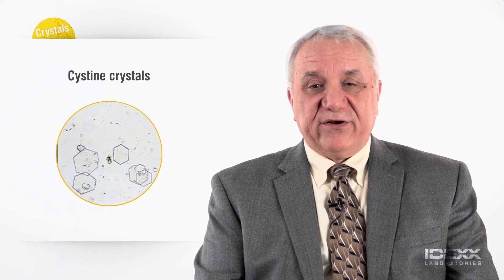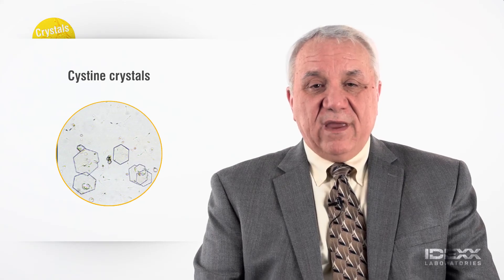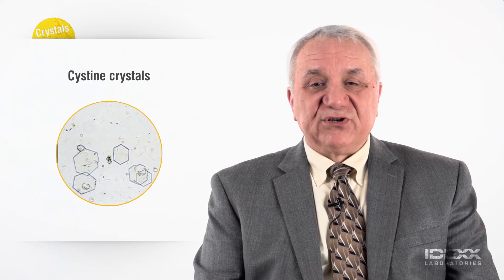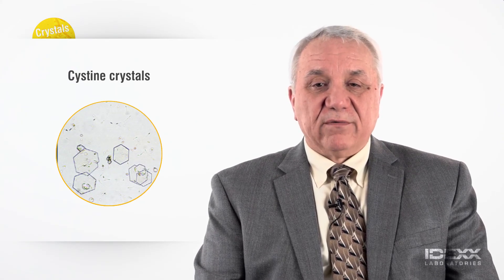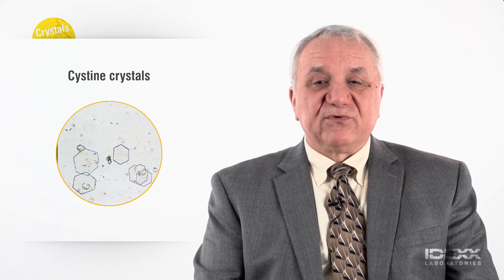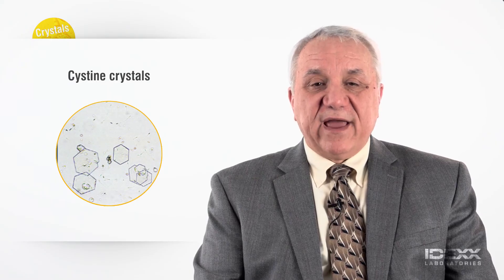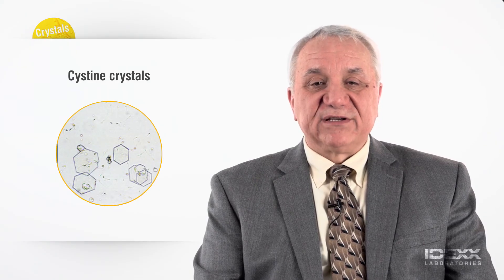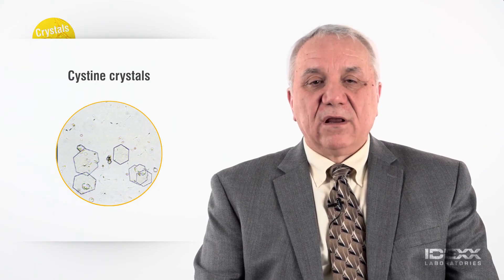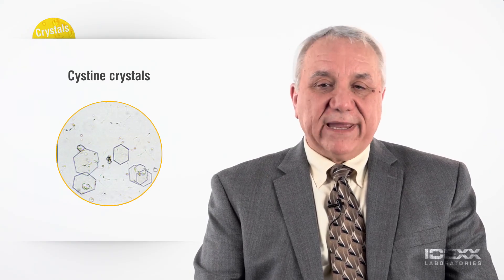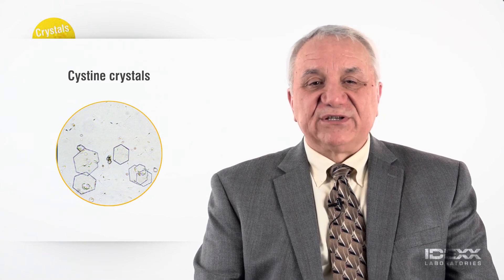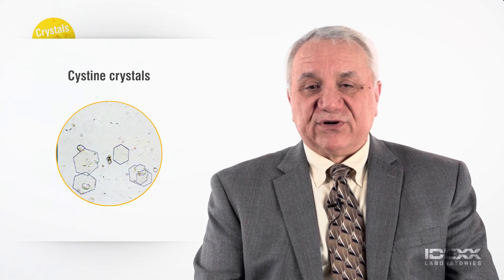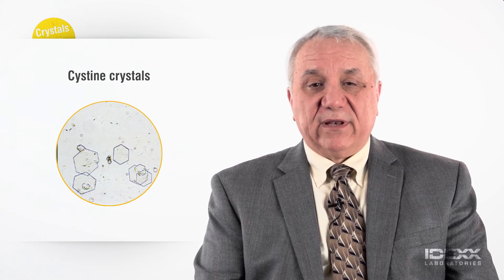Cystine crystalluria is never considered normal, and when present suggests an underlying metabolic disorder. These crystals are typically identified as six-sided or hexagonal, colorless, plate-like crystals. The various sides of the crystals are typically equal in length.